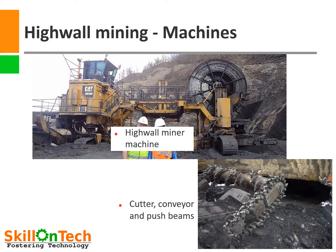Highwall mining is done using highwall miner machines. In the top picture you can see a highwall miner machine, while in the bottom picture you can see the cutter, conveyor, and push beams of this machine. The cutter cuts the rock, push beams support the cutter and conveyor, while the conveyor transports the mineral from the cutter end to the machine. Push beams hydraulically push the cutter inside the seam and can push up to 300 meters inside without removing overburden.